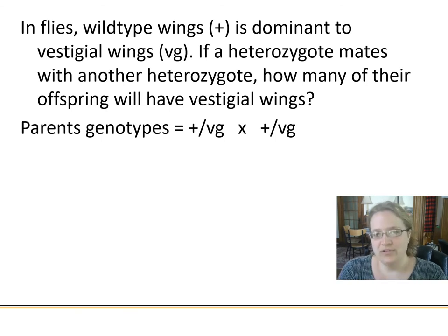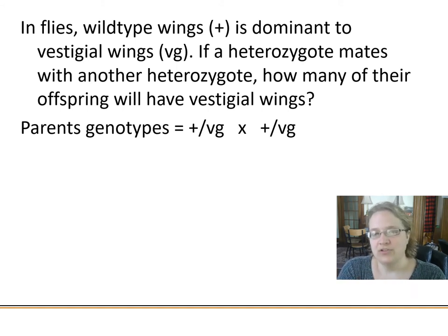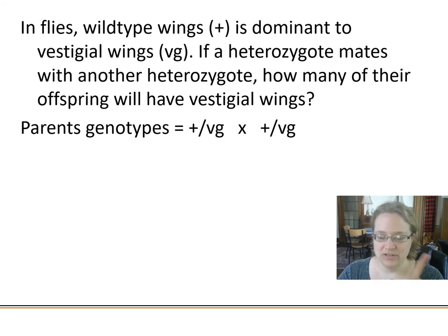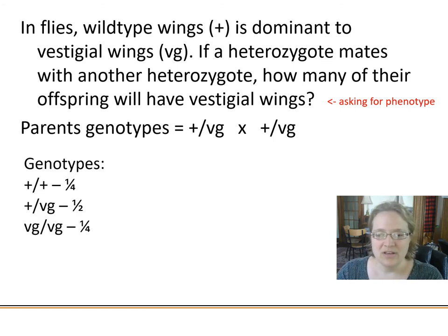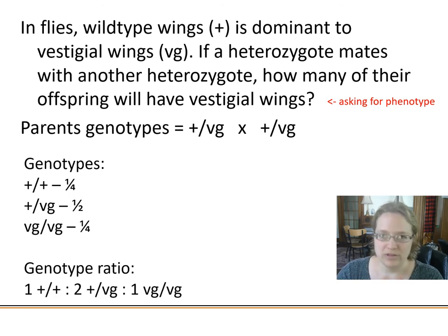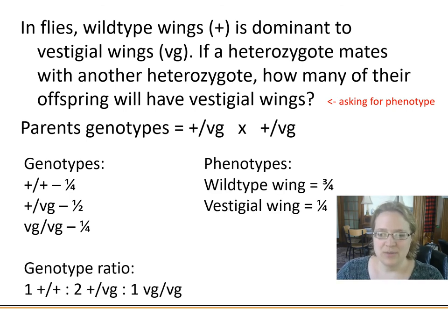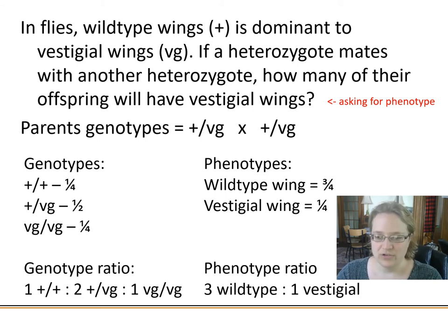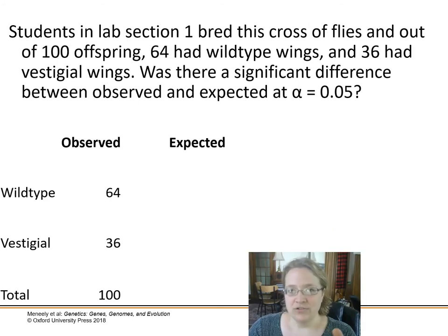Let's run through an example. In flies, wild-type wings is a dominant trait compared to vestigial wings, which are pronounced small and crinkly. If we have two heterozygotes mating, how many of their offspring will have vestigial wings? With two heterozygotes crossing, we get a one-to-two-to-one genotype ratio. Our phenotypes come out as three-quarters wild-type and one-quarter vestigial — a three wild-type to one vestigial phenotype ratio. That's our expected ratio.